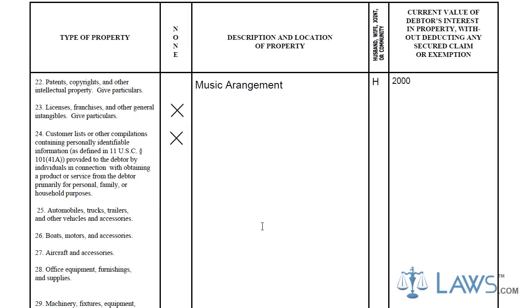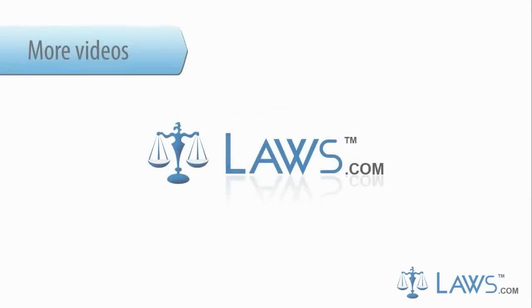The columns will inquire as to the type of property in which you are filing, the description and location of the property, and the current value of your interest in the property, minus any secured claims or exemptions that may exist.